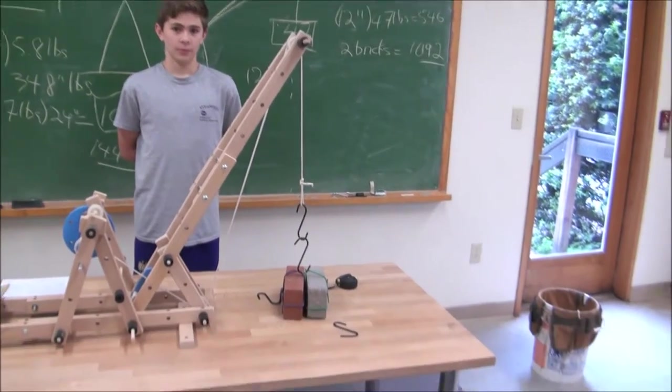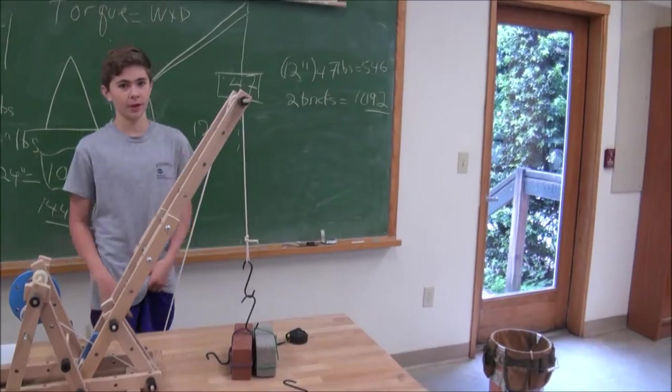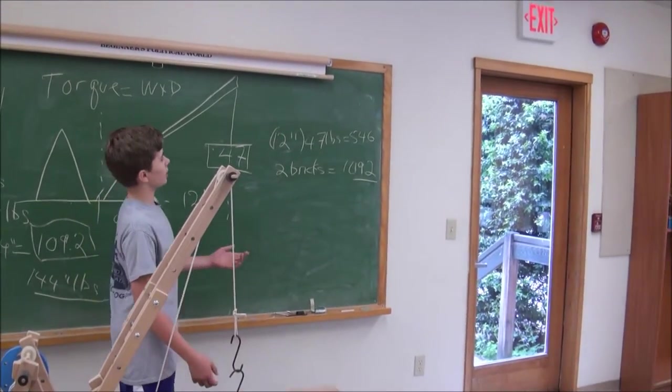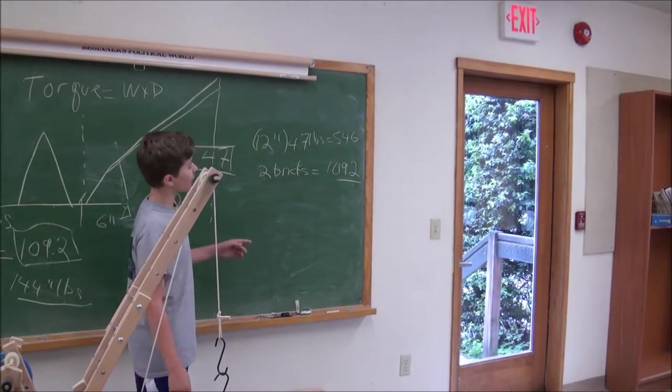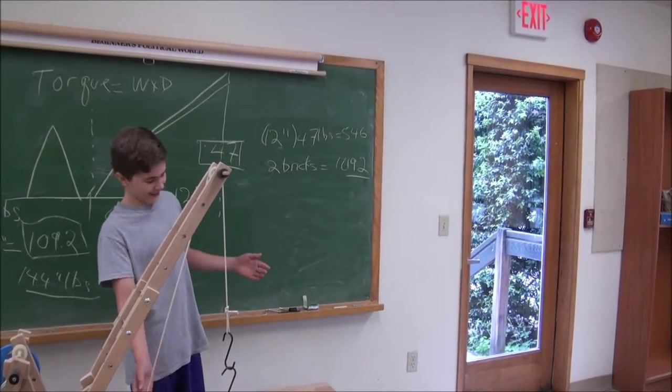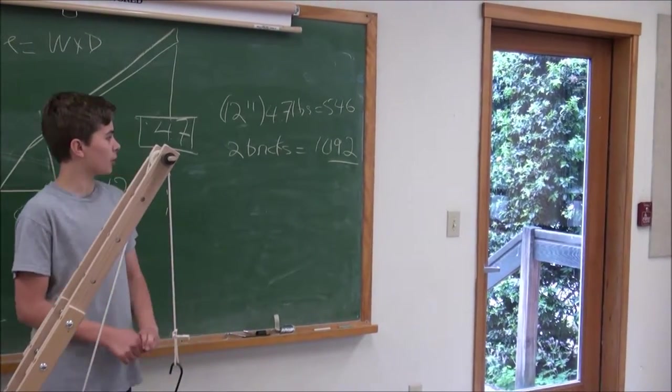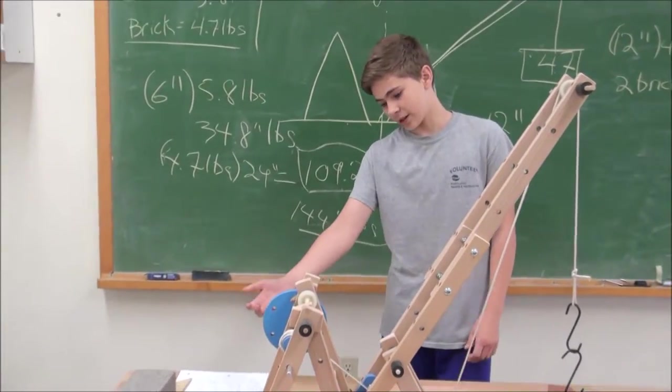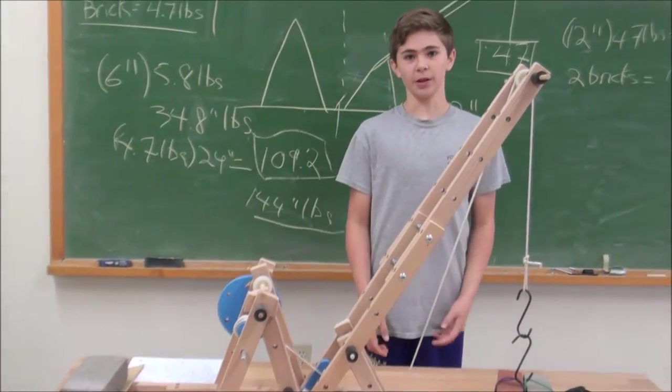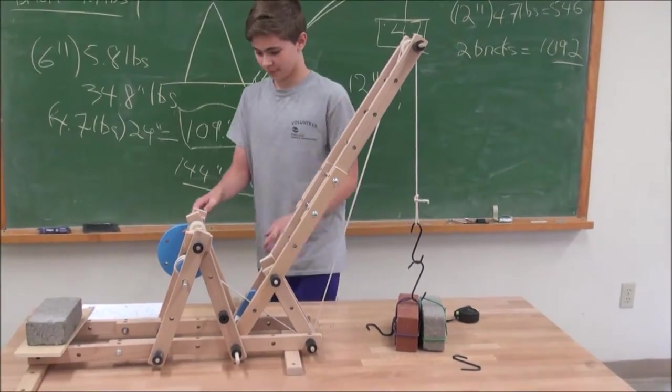We doubled up the load. We got an extra brick. So with only one brick, we had 54.6 inch pounds on this side. So if we make two bricks, we're just doubling that so we get 109.2 inch pounds, which is still less than the amount on this side, so it's still going to work. Raise the load.